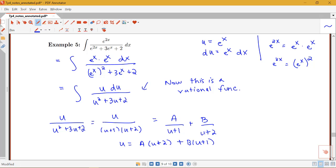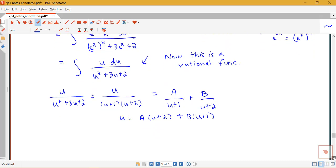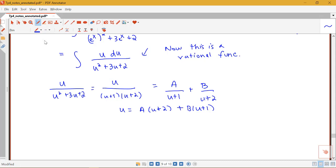So we know when we have these just nice simple linear ones, it's going to be pretty quick to find our values of a and b by just plugging in some nice convenient values. So I could plug in u equals negative 2. So I'd have negative 2 equals 0 here plus negative b. So I see that b is going to be equal to 2.